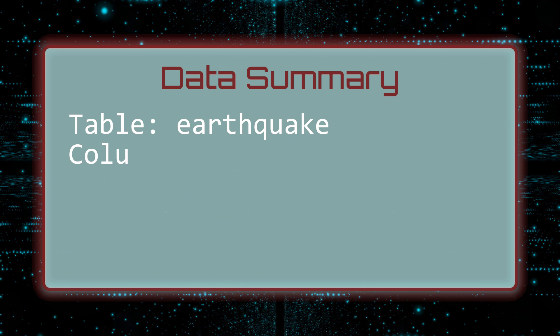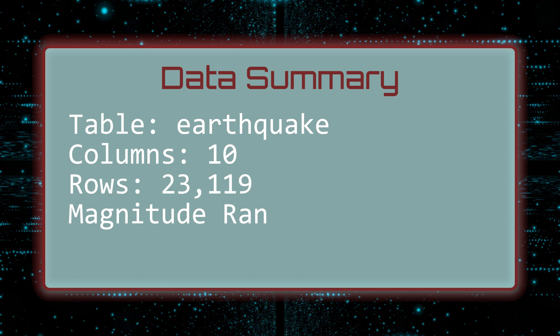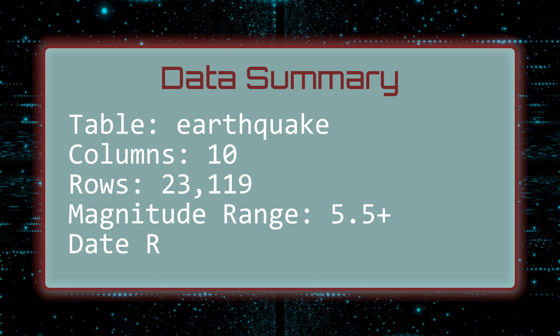The earthquake table contains 10 columns, with information on 23,119 quakes of magnitude 5.5 or greater, covering the 50-year period from 1969 through 2018.